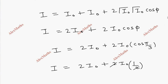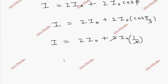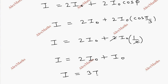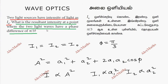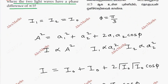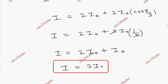The 2s cancel out, giving I equals 2I₀ plus I₀. So the total resultant intensity equals 3I₀. This is the resultant intensity when the two light waves have a phase difference of π/3.